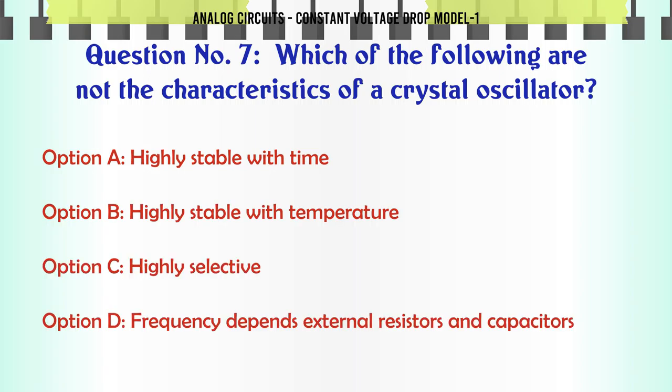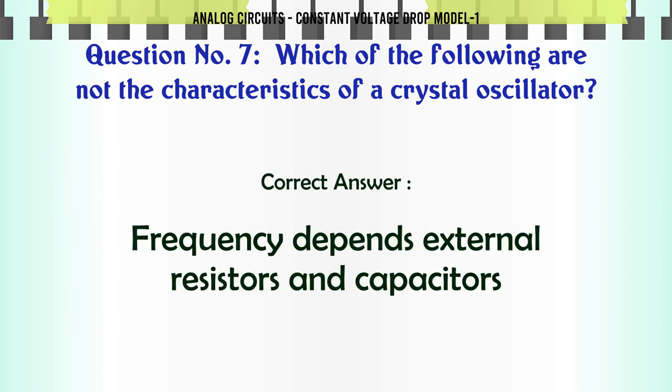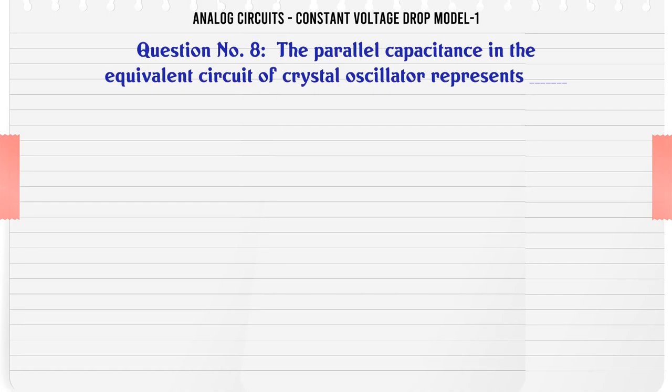Which of the following are NOT characteristics of a crystal oscillator? A) Highly stable with time, B) Highly stable with temperature, C) Highly selective, D) Frequency depends on external resistors and capacitors. The correct answer is: Frequency depends on external resistors and capacitors.